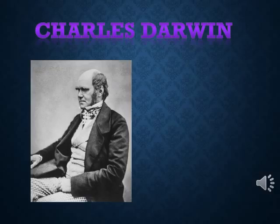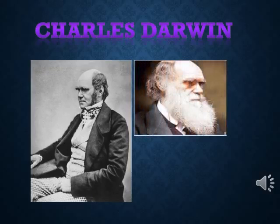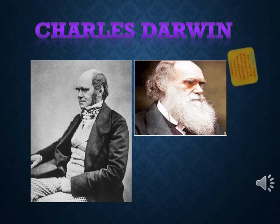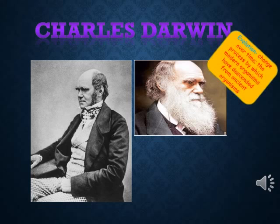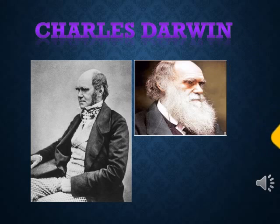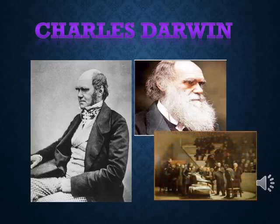Charles Darwin was born in England on February 12, 1809, the same day as Abraham Lincoln. He grew up at a time when the scientific view of the natural world was shifting dramatically. Geologists were suggesting that Earth was ancient and had changed over time. Biologists were suggesting that life on Earth had also changed. The process of change over time is called evolution. Darwin developed a scientific theory of biological evolution that explains how modern organisms evolved over long periods of time through descent from common ancestors.